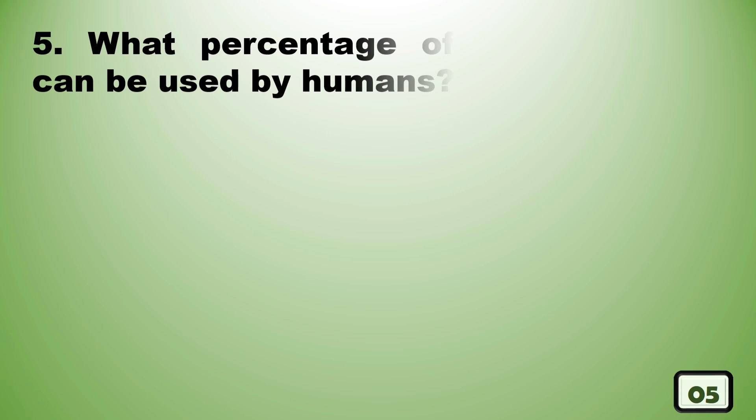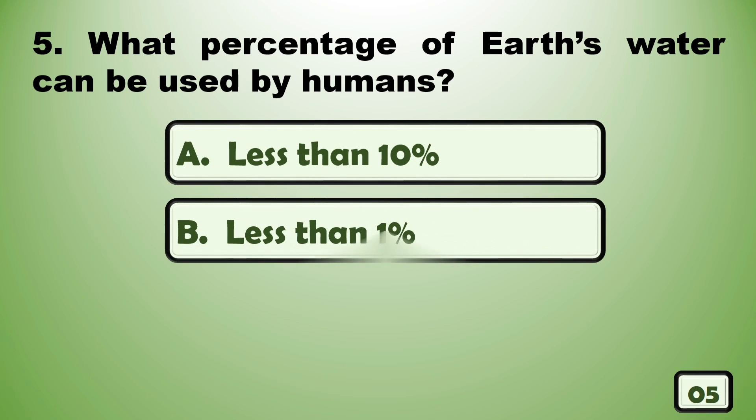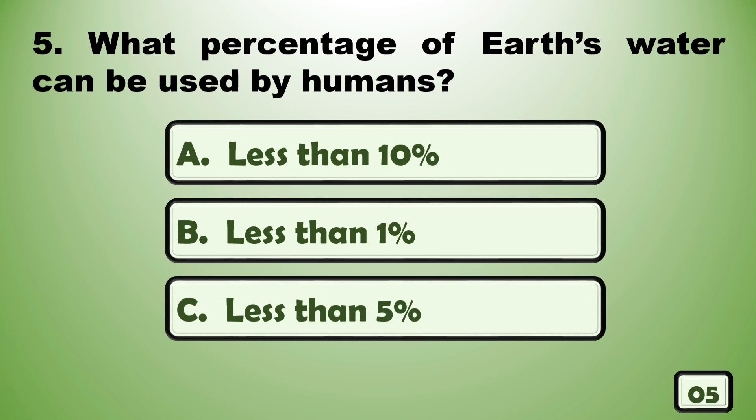What percentage of Earth's water can be used by humans? Less than 1%.